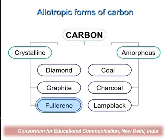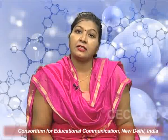Carbon forms two types: crystalline and amorphous. In the crystalline form, the allotropes of carbon atoms are diamond, graphite, and fullerene. Diamond and graphite were discovered earlier, and fullerene was the new element discovered in 1985. Fullerene is the third allotrope of the carbon atom.